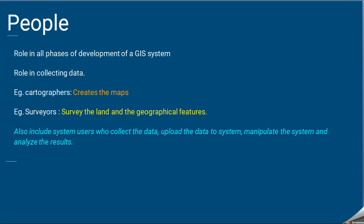Another GIS component is people — those who use GIS and those who create maps, like cartographers and surveyors who survey the land, update the GIS system, and create maps. There are also users of the GIS system who manipulate and analyze the data.